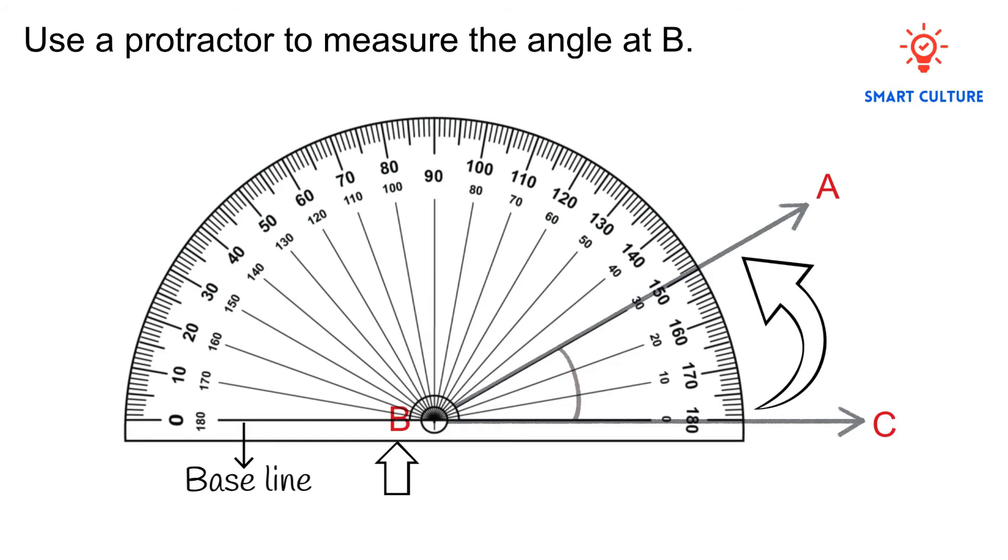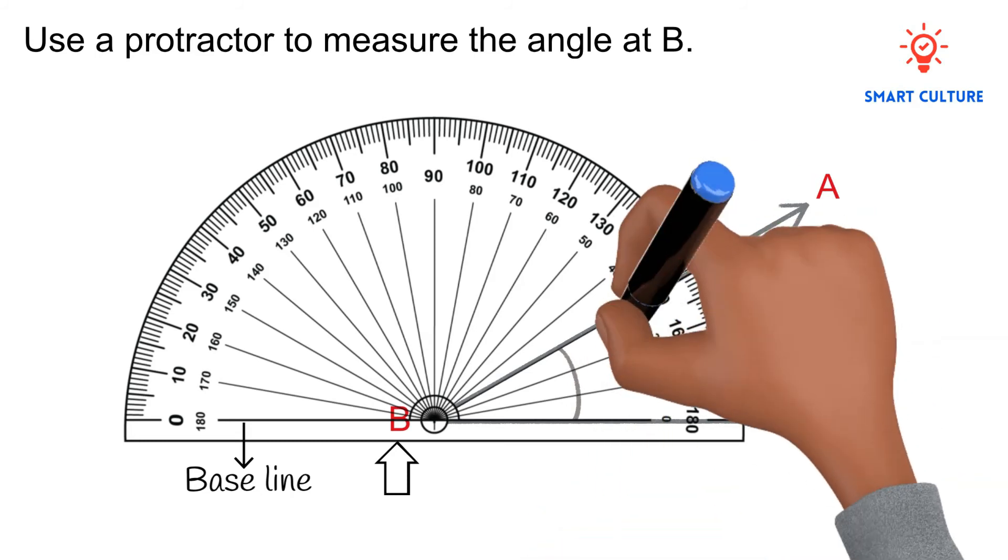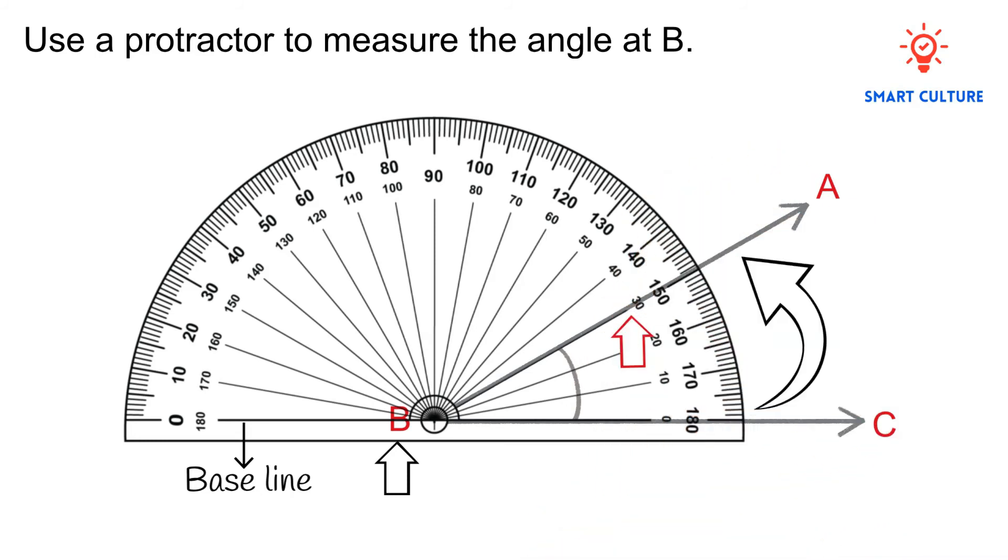Where the arm BA cuts the scale on the ruler grid of the protractor, read the number of degrees on the inner scale. So in this case we're working with the inner scale. You'll see that this angle is equal to 30 degrees. And this is how you can go about measuring an angle using a protractor.